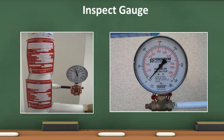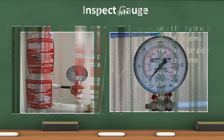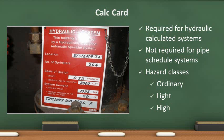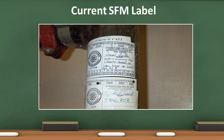Visually inspect the gauges. They should be in good condition and readable. Check the pressure and compare it to the calculation card. In the photo on the left, there is pressure indicated on the gauge. In the photo on the right, there is no pressure in the system. Hydraulic nameplates for hydraulically designed systems shall be inspected quarterly to verify that it is attached securely to the sprinkler riser and is legible. Labels indicating the five-year certification date shall be used on water-based fire protection systems and shall be securely attached to each automatic fire extinguishing system at the time of service.